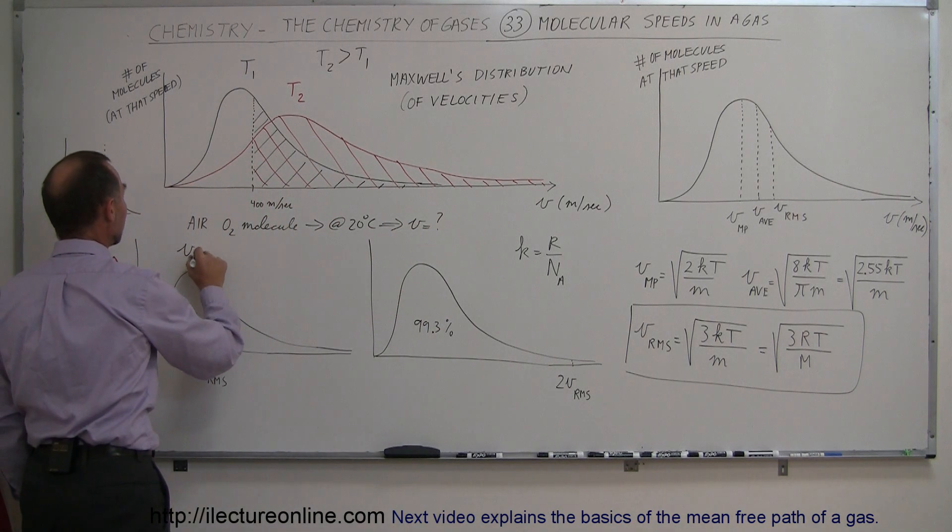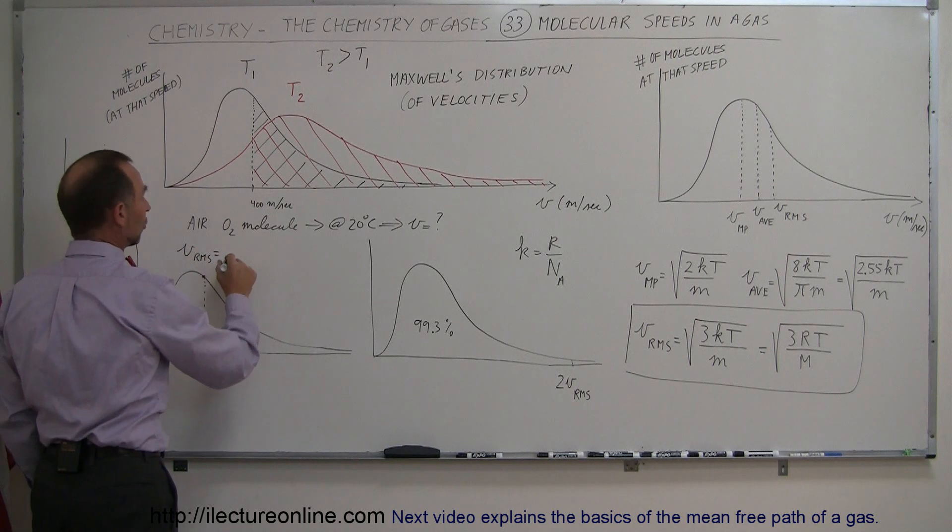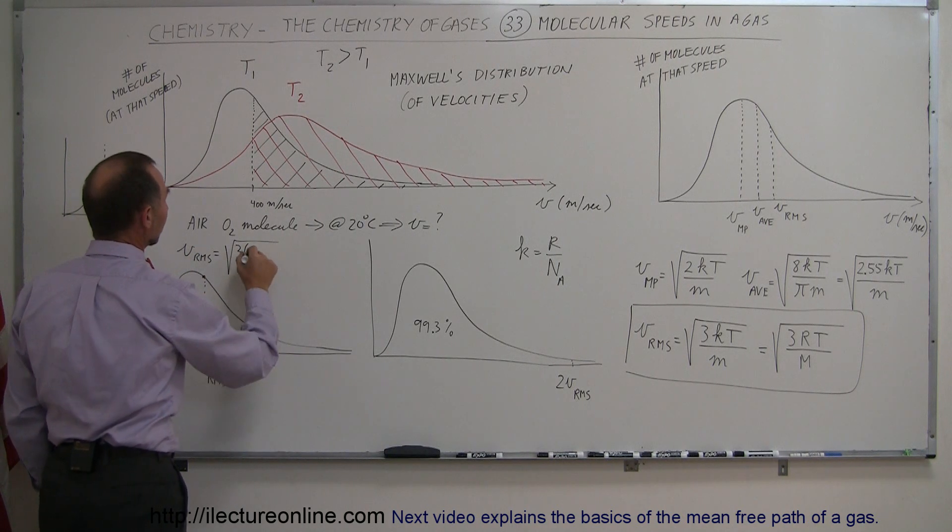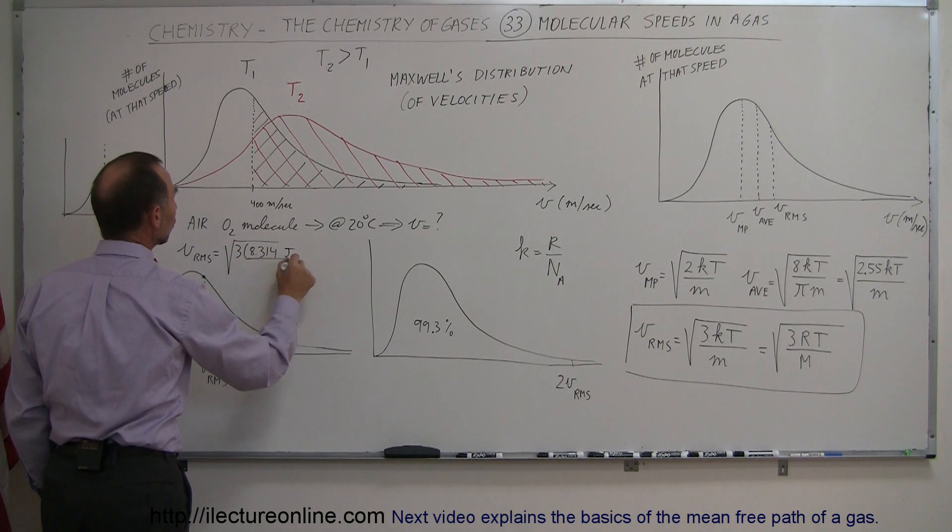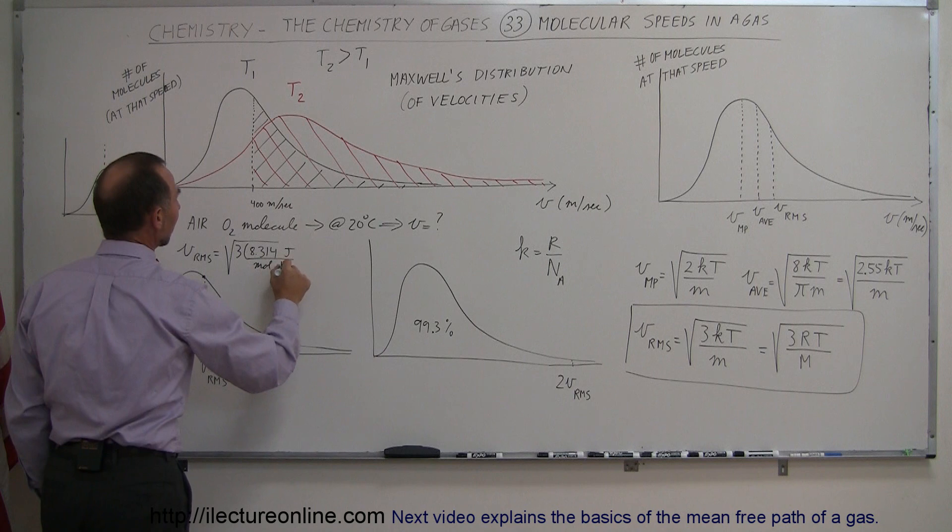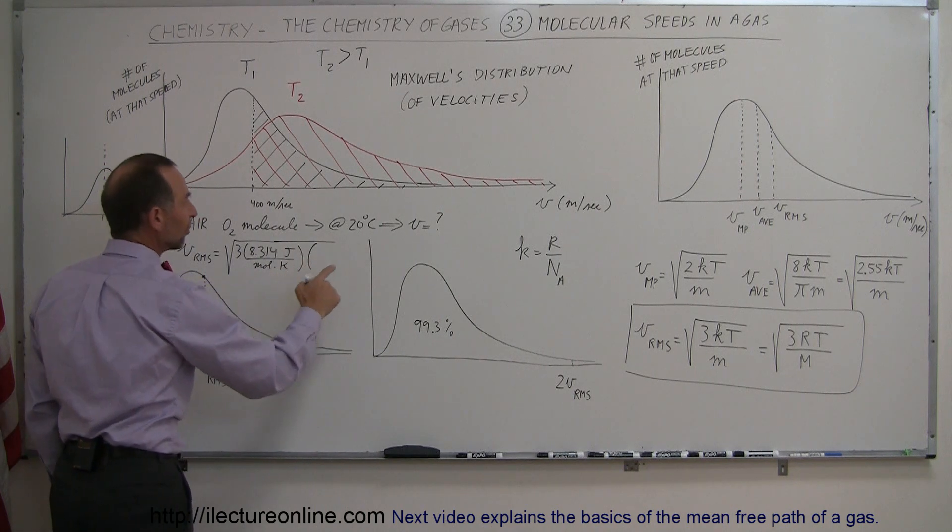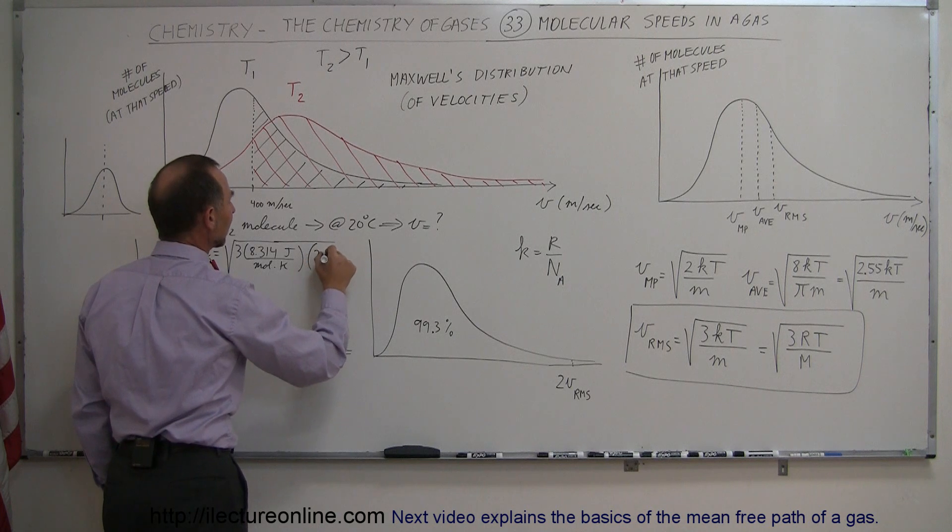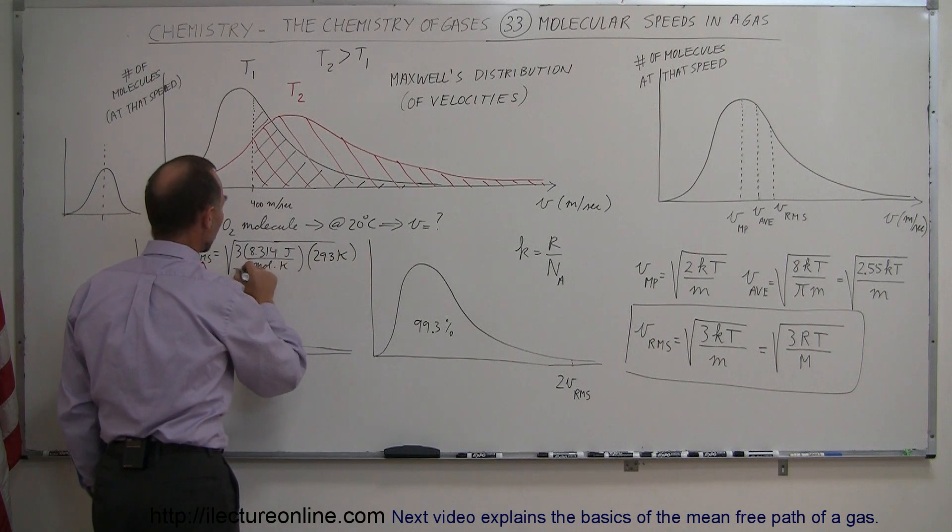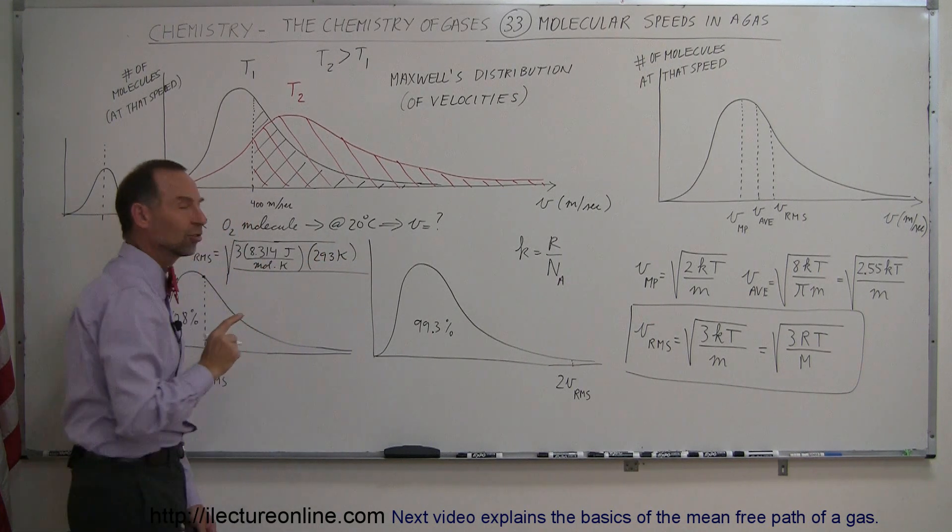We can say that V_RMS is equal to the square root of 3 times the gas constant, which is 8.314 joules per mole Kelvin, times the temperature, which is 20 degrees plus 273, which is 293 Kelvin, and we divide the whole thing by the molar mass of oxygen gas in the air.